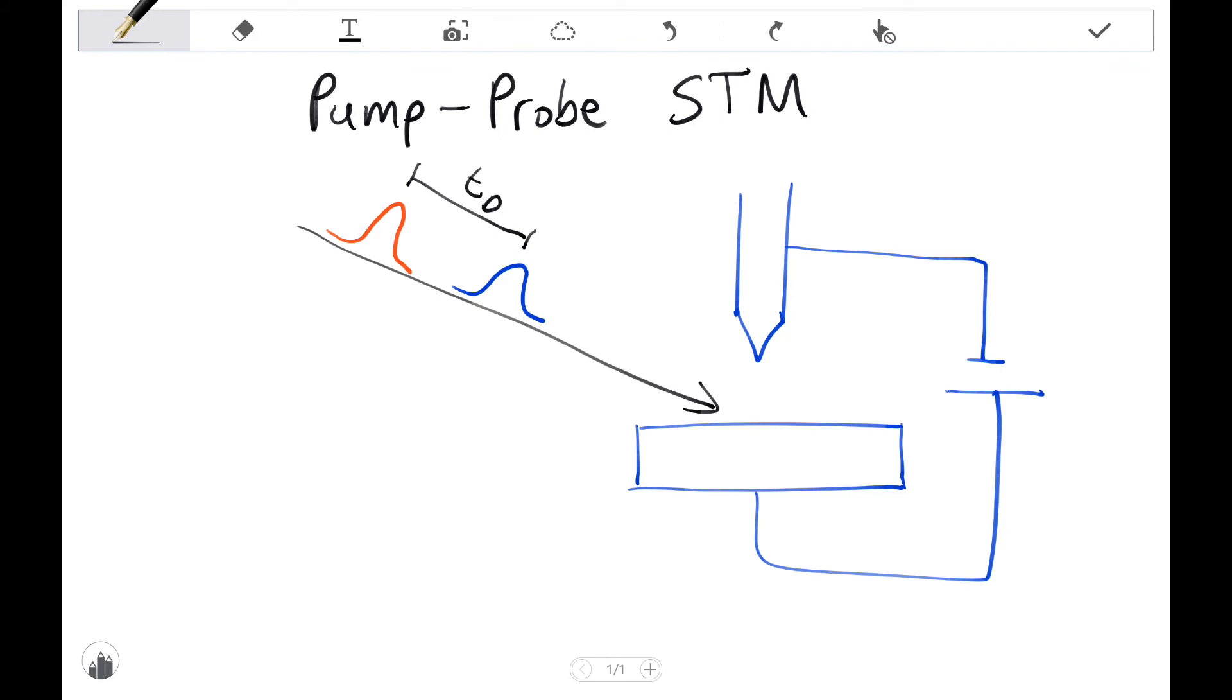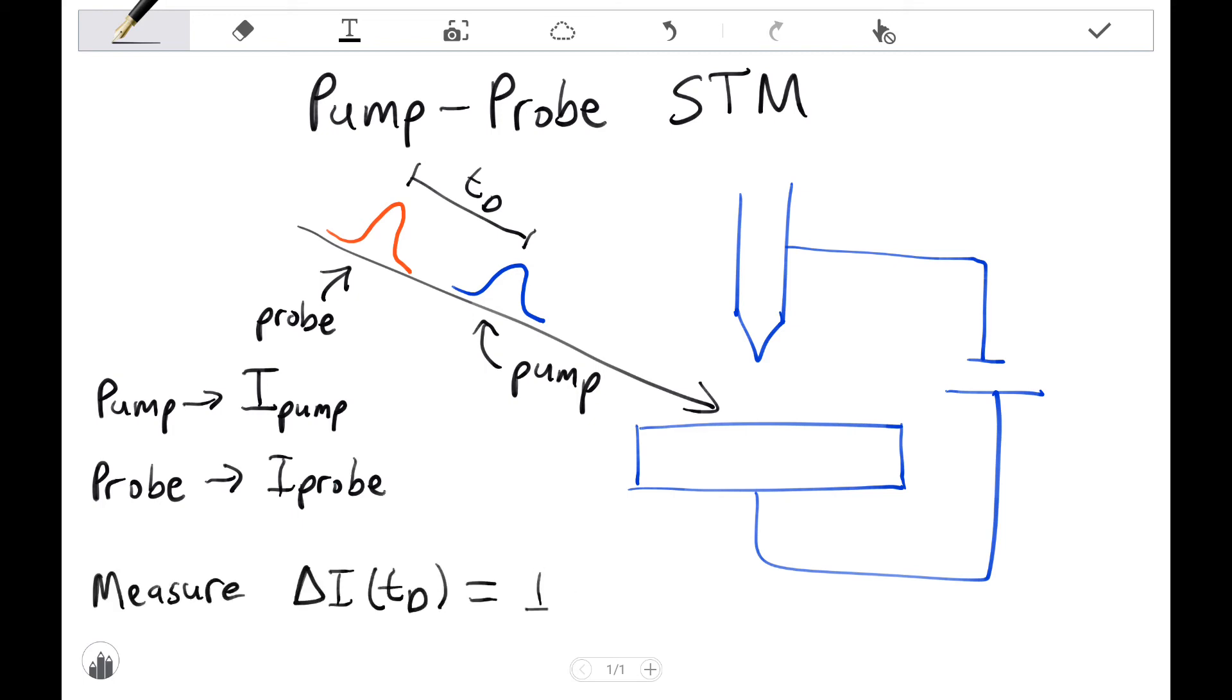Pump-probe STM tries to borrow some of these principles from pump-probe spectroscopy. However, this time, both the pump and the probe are now incident on the position of the sample, which is also being probed by the STM tip. Both the pump and the probe pulses will induce their own corresponding tunneling currents. In this technique, we would then have to measure the difference between these two signals as a function of time delay between the two pulses.